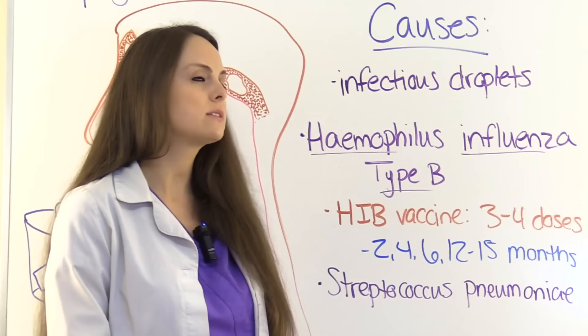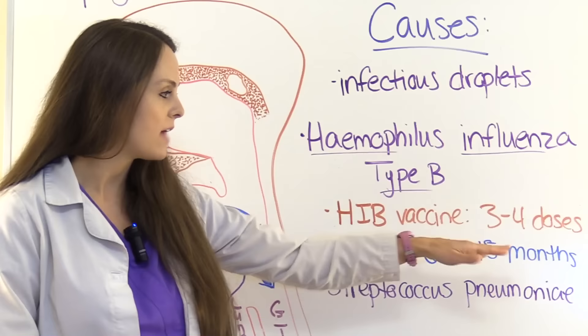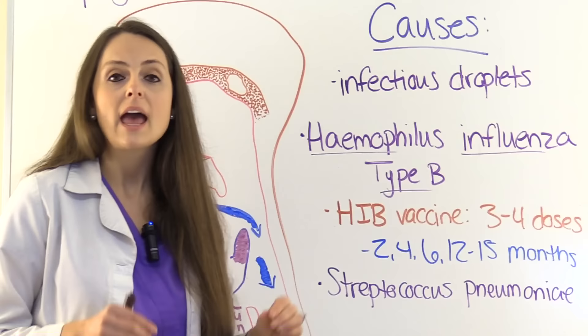The child will receive the Hib vaccine at two months, four months, six months, and 12 to 15 months. As a side note, in my next video I'll be going over the pediatric vaccination schedule and provide mnemonics to help you remember all those vaccines, so be sure to check that out.